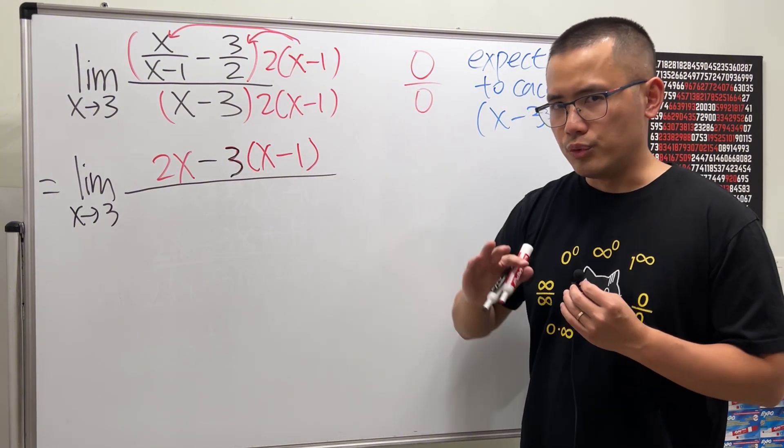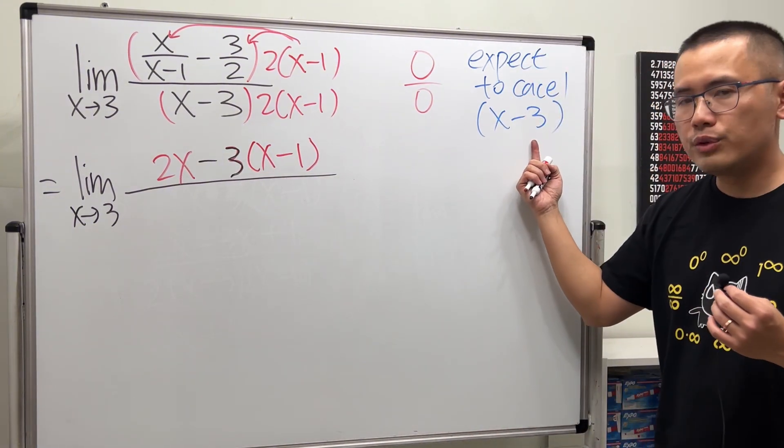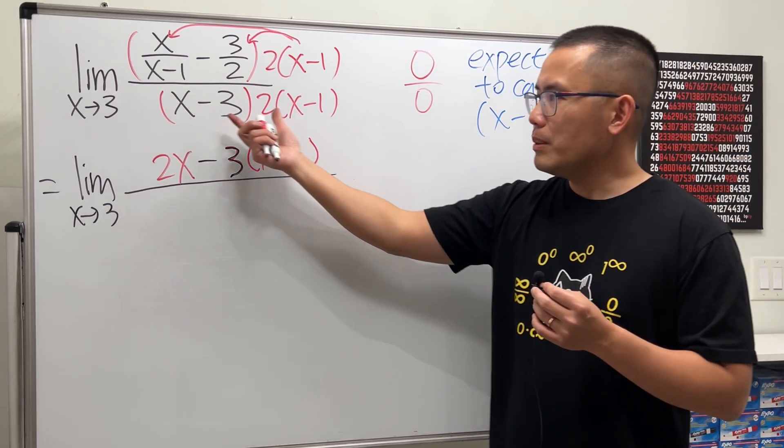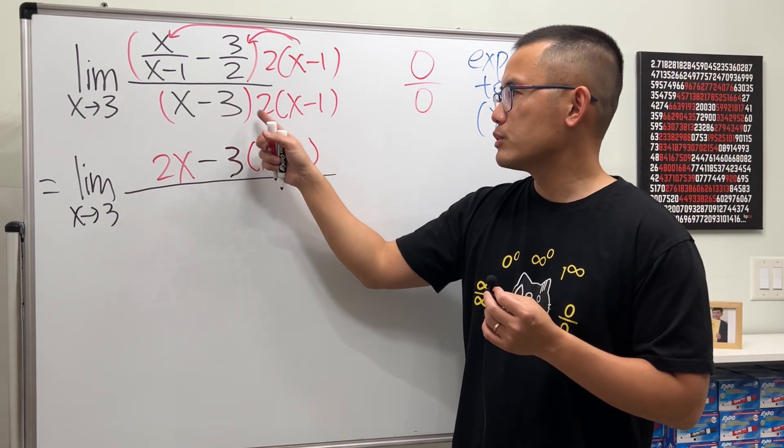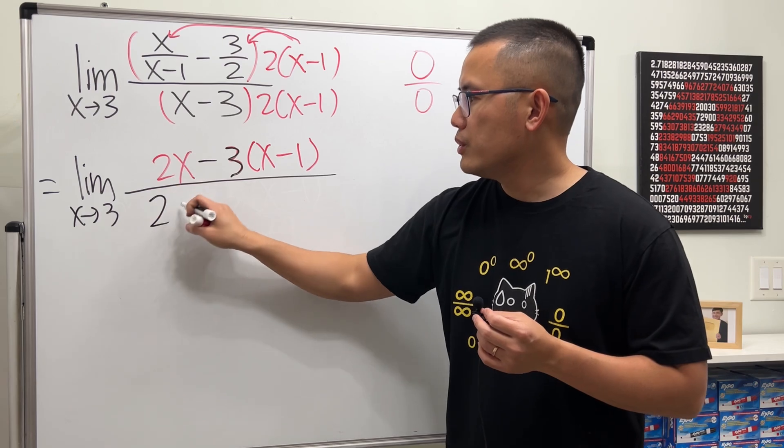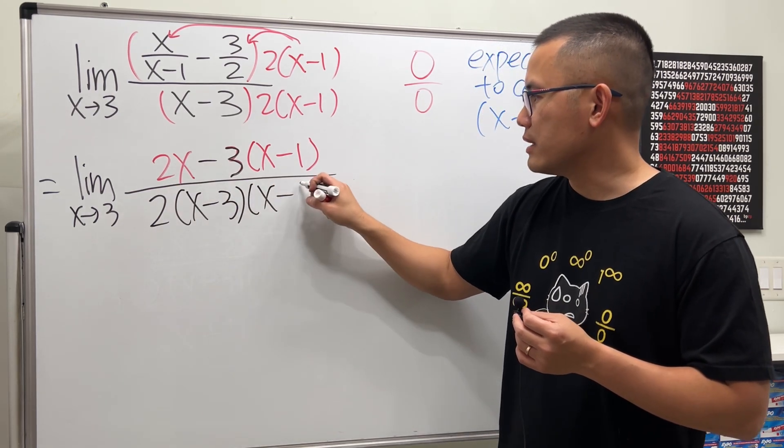On the bottom, do not multiply the top because we're expecting to cancel x minus 3, so I'm just going to leave it like this. Perhaps we can put a 2 in the front though: 2 times x minus 3 times x minus 1.